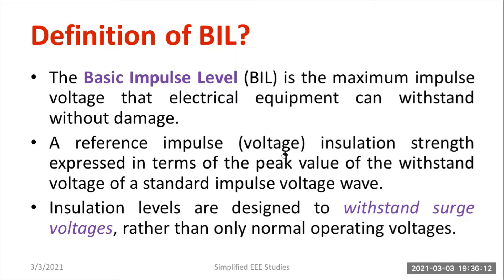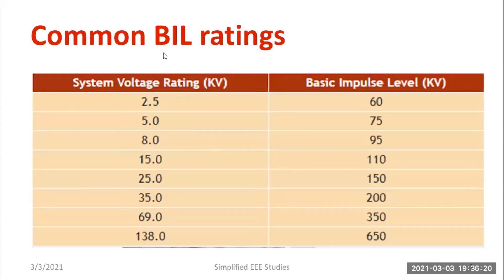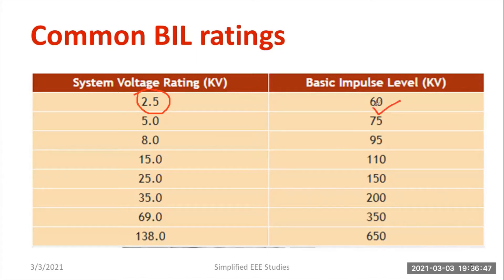Now let us consider a table — with the help of this table I can explain in a better manner. You can observe system voltage rating and Basic Impulse Level, both expressed in kV. For the first example, the system voltage rating is 2.5 kV, and the Basic Impulse Level given is 60 kV.